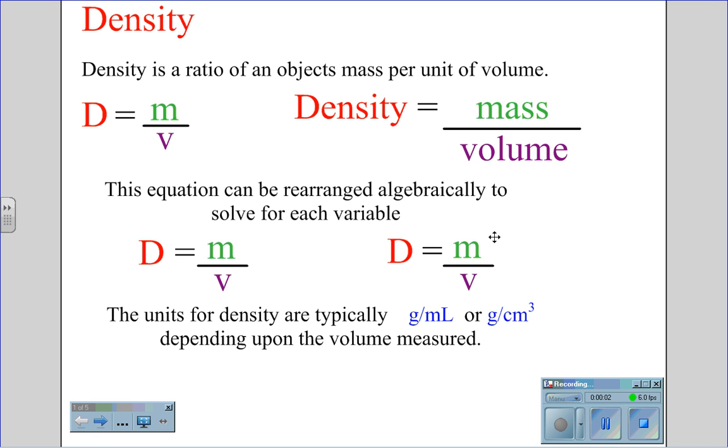Density. Density is a ratio of an object's mass per unit of volume. Density, represented by D, is equal to the mass, M, divided by the volume, V.